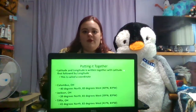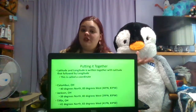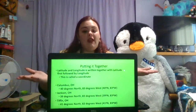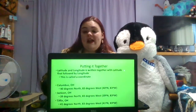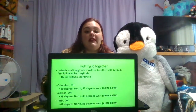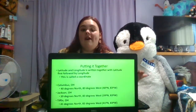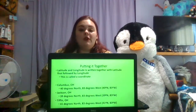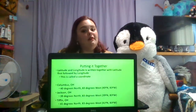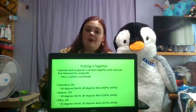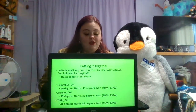Now let's take everything we've learned and put it all together. Latitude and longitude are written together with your latitude measurement first, followed by your longitude measurement. This is called a coordinate — make sure you write that down as one of your vocabulary words. Taking our three examples: Columbus, Ohio is at 40 degrees north, 83 degrees west; Jackson, Ohio is at 39 degrees north, 83 degrees west; and Tiffin, Ohio is at 41 degrees north, 83 degrees west. Make sure you're checking the answers you wrote down in your notes.